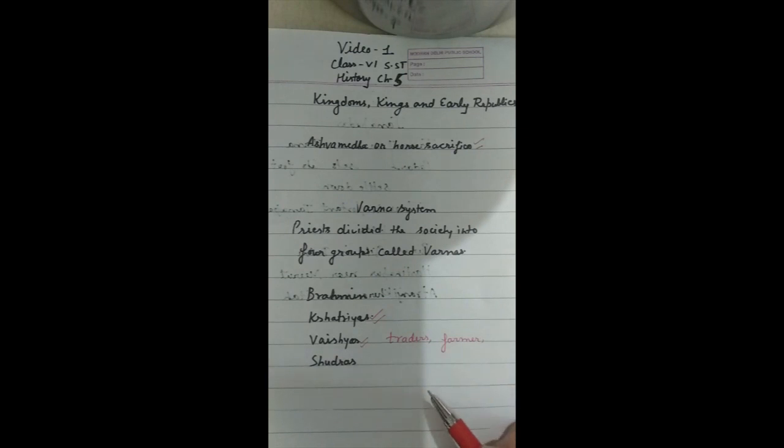Both the Kshatriyas and Vaishyas could perform sacrifices. It means Brahmans, Vaishyas and Kshatriyas could perform sacrifices.